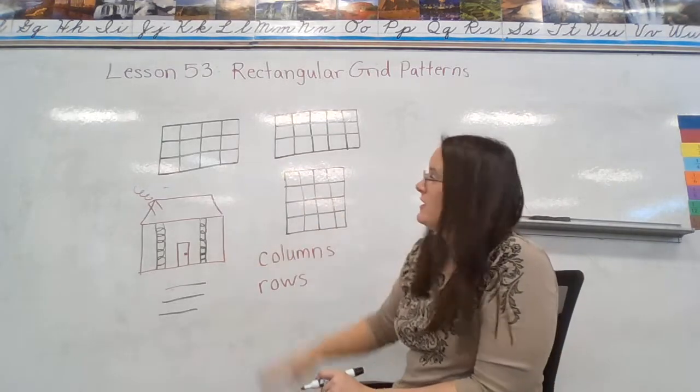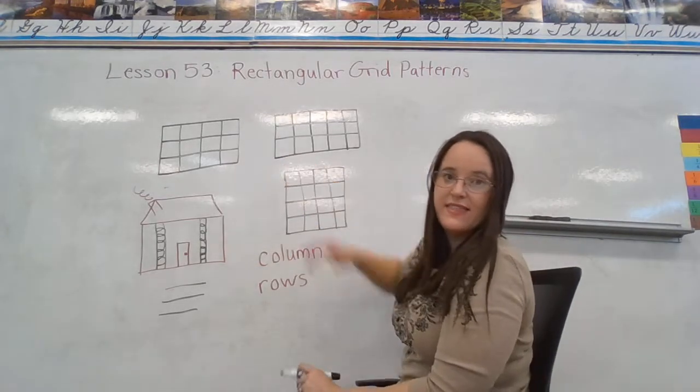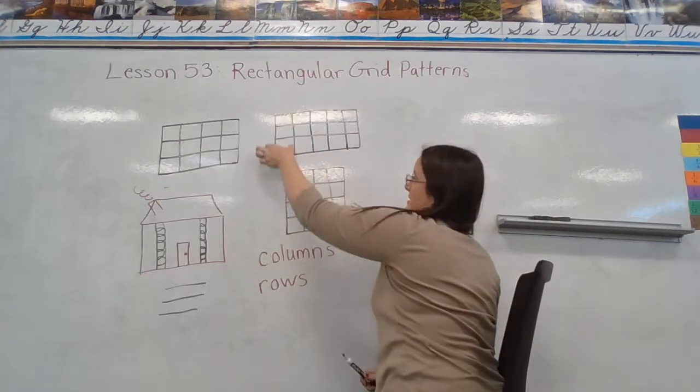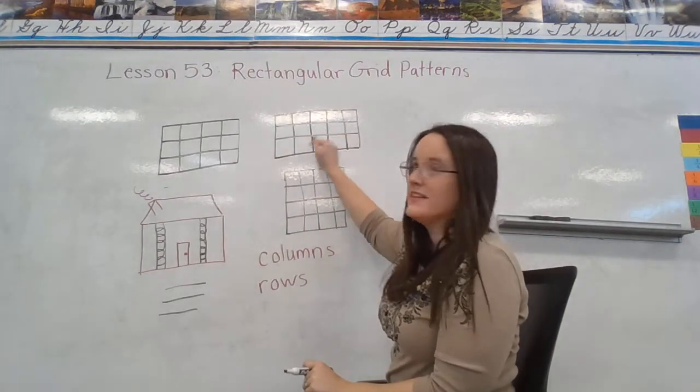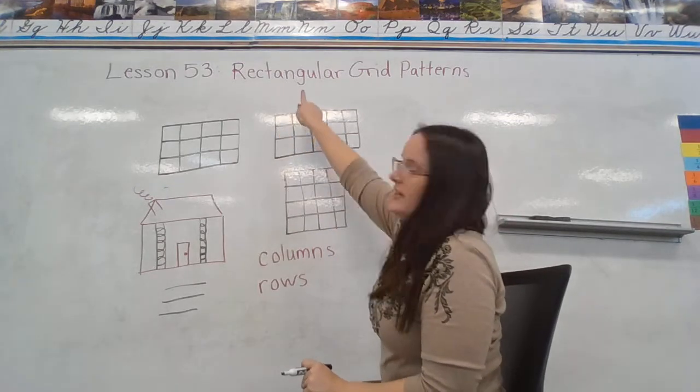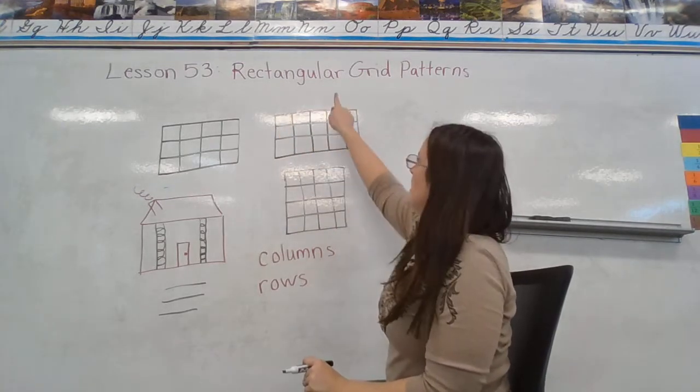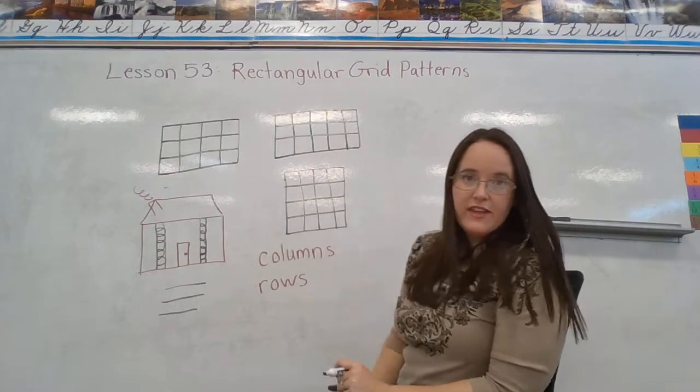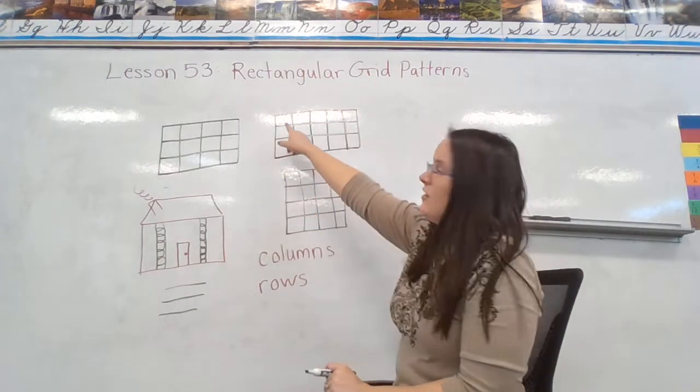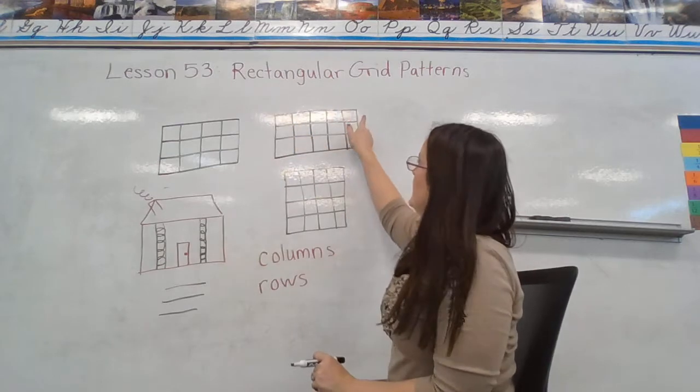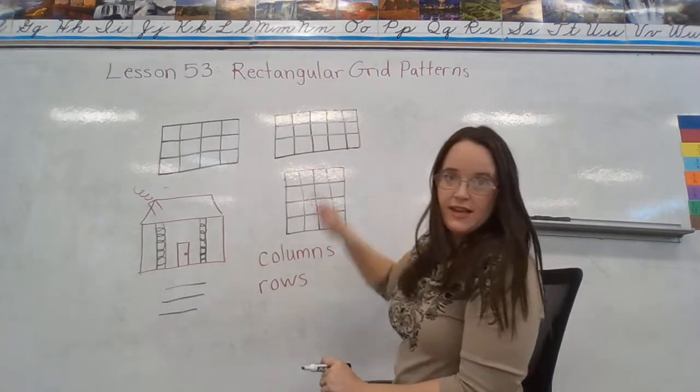If we're looking at any of my grid patterns here, the column goes this way. So the question might be, how many columns are in this grid pattern? It'd be one, two, three, four, five, versus the rows go horizontally. So how many rows? We have one, two, three. Okay?